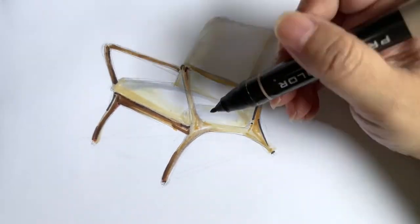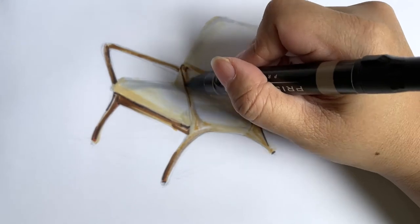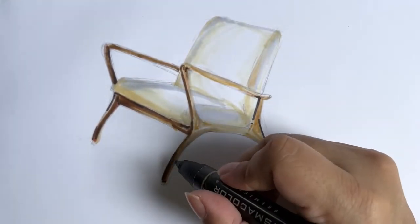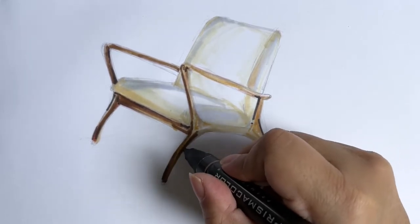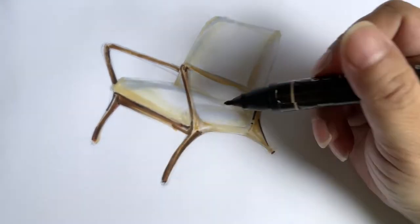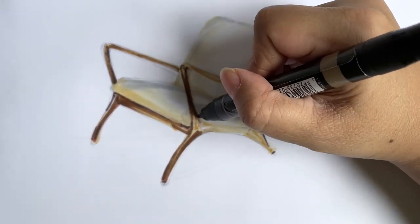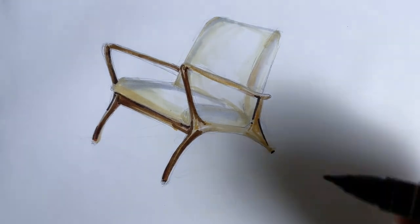Now for the fine areas, I'm going to use the thin end if I'm trying to control a specific area, but mainly I use the thick end. But this area, because I want to make sure I have my little light area reveal, I'm going to use the fine tip.